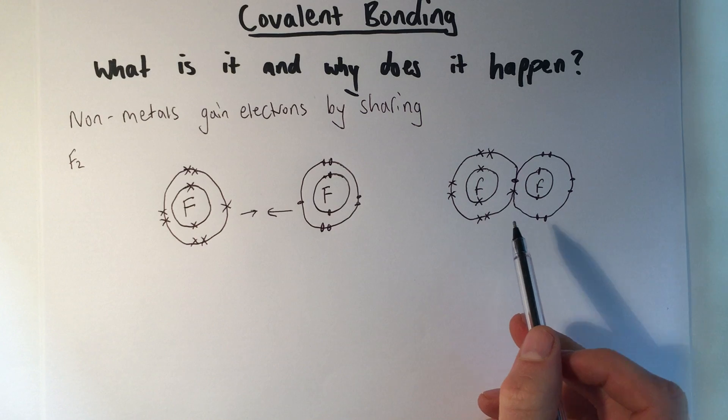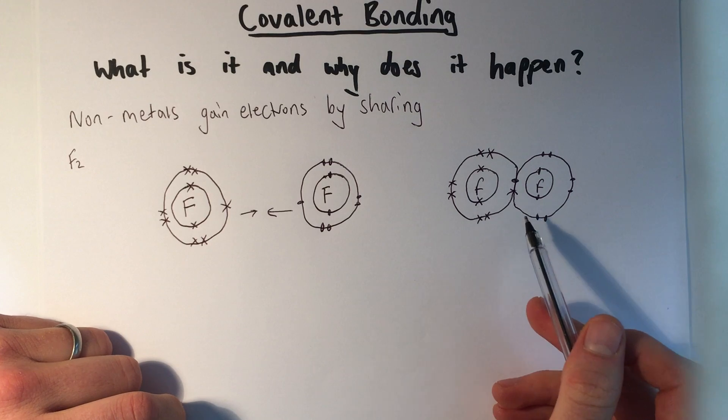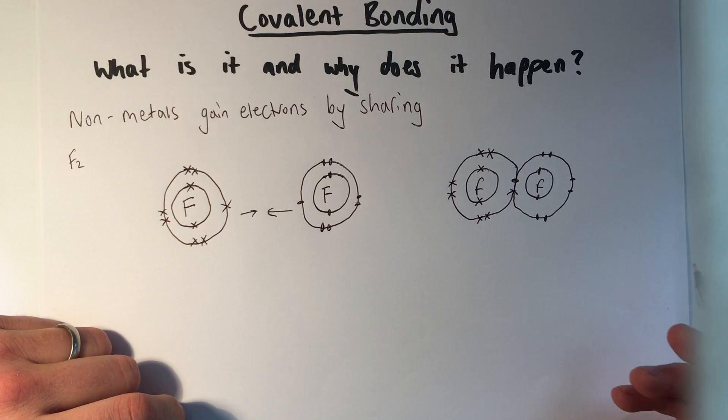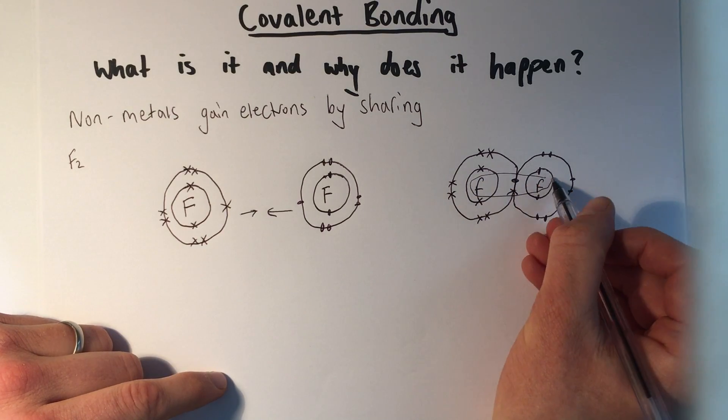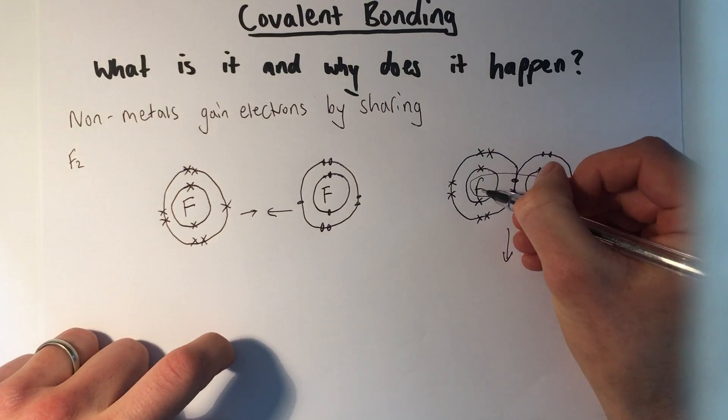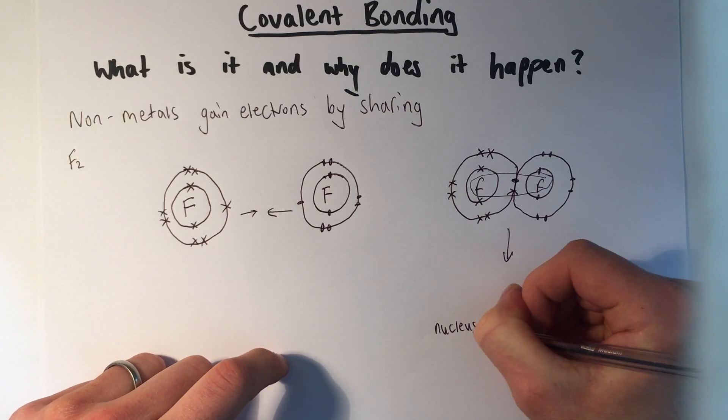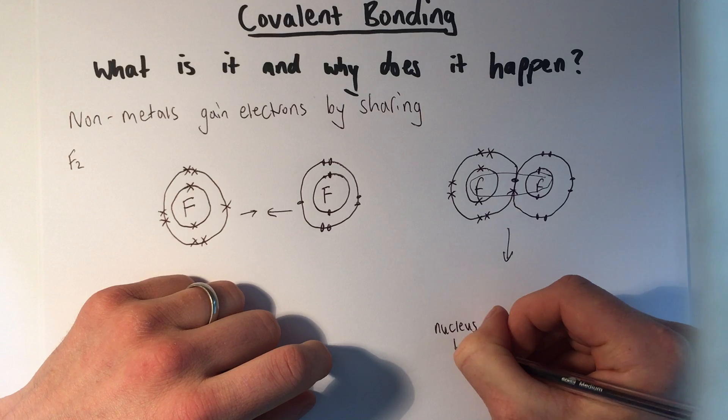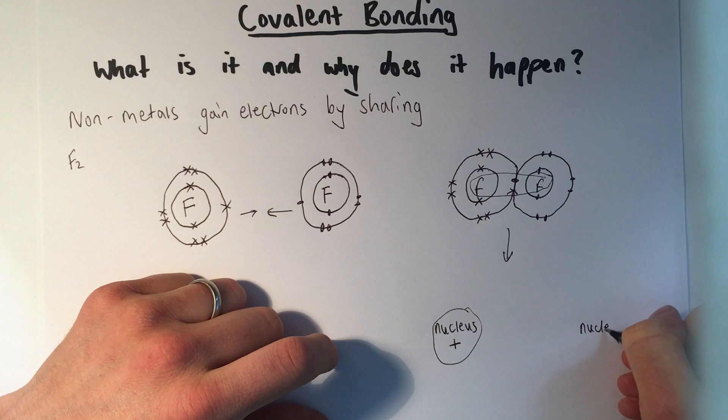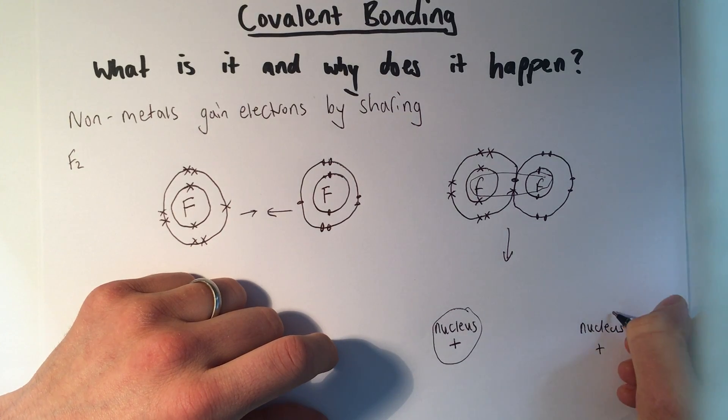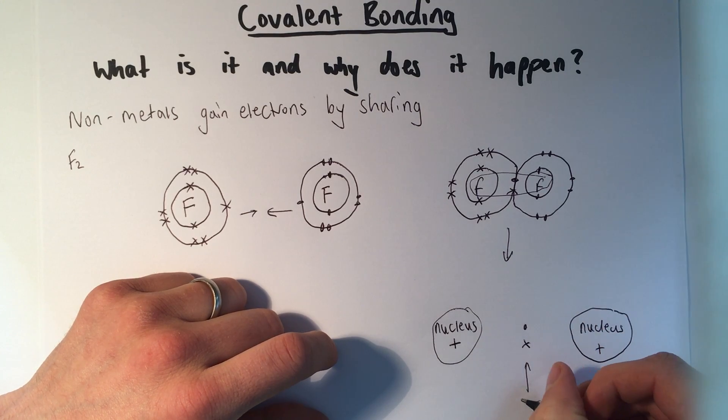What we've made here is a dot and cross diagram for a covalent substance. And that's different, it looks different to an ionic one. What actually is the bond then? What's holding that together? Well, if we were to take this part here and just zoom in there, what I've shown is that F there is the nucleus and the nucleus is made of protons and neutrons. So overall, the nucleus is positive. And the same there for that other fluorine atom.